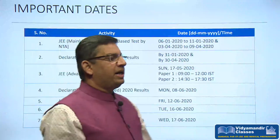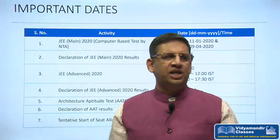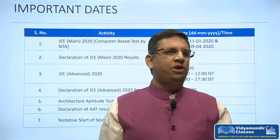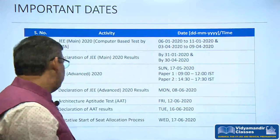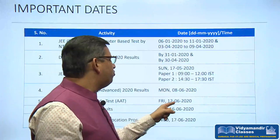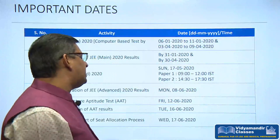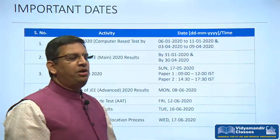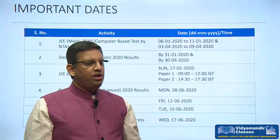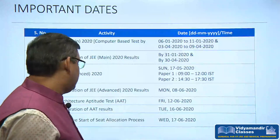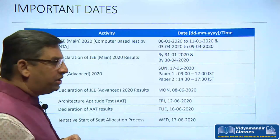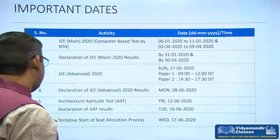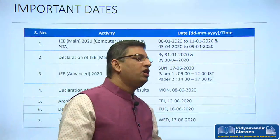Students who want to pursue a career in Architecture — those who qualify JEE Advanced — can appear for the Architecture Aptitude Test on 12th June. The Architecture Aptitude result will be declared on 16th June, and the tentative start of the seat allocation process is from 17th June.